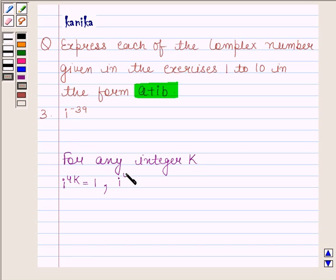Iota raised to the power 4k plus 1 is equal to iota. Iota raised to the power 4k plus 2 is equal to minus 1. And iota raised to the power 4k plus 3 is equal to minus iota. These rules will help us to solve the question. So this is the key idea.